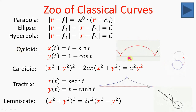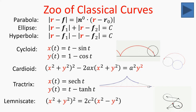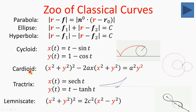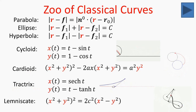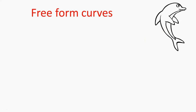The cycloid is the motion of a point on a bicycle wheel when riding on flat terrain. The cardioid is related — if we ride not only on flat terrain but on another circle, a point on the bicycle wheel travels along a cardioid curve. The tractrix is the path of a brick when we take it for a walk on a dog leash. Finally, the lemniscate — the infinity sign — is defined by the path of a point of a mechanical structure consisting of three line segments.